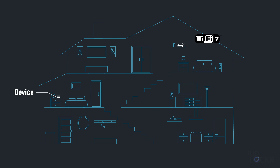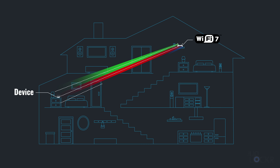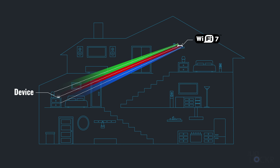Now, a device can send and receive data on 2.4 GHz, 5 GHz, and 6 GHz all at the same time, potentially using much wider channels, allowing them to transmit even more data. It can also adjust what channels and bands it's using to get higher speed, lower latency, and better reliability — dodging interference automatically.